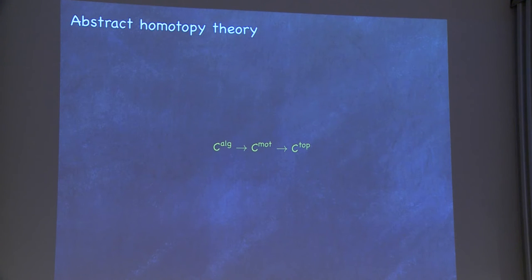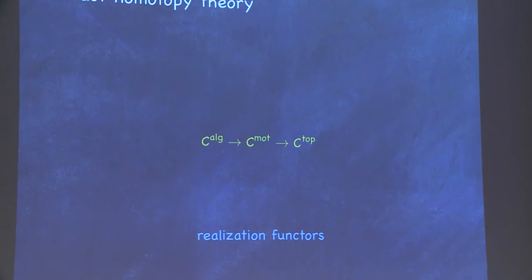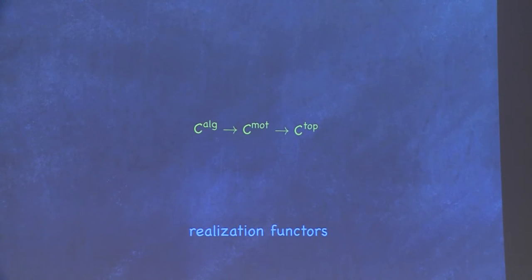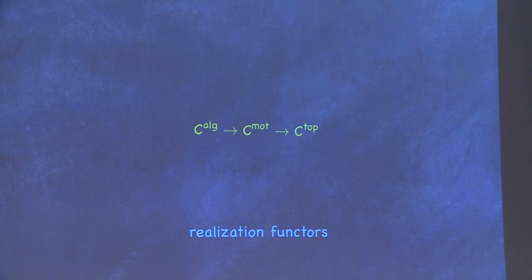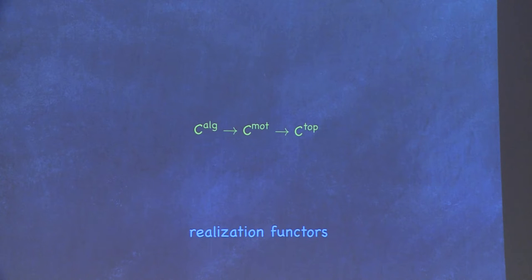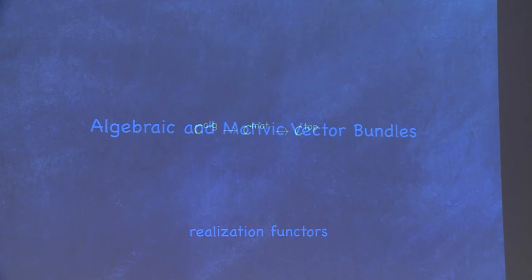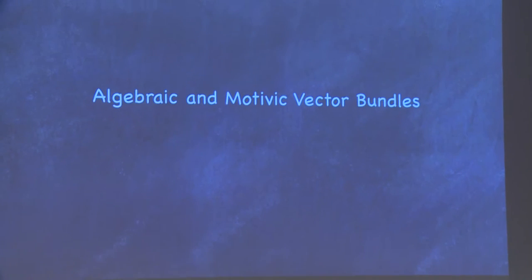There are realization functors. The motivic equivalences contain the algebraic equivalences, so for formal reasons there's a functor from algebraic to motivic homotopy theory. Over the complex numbers, since the affine line is contractible in topology, there's also a realization functor to topology — it sends a variety to the underlying analytic variety. So that's the basic setup of abstract homotopy theory.